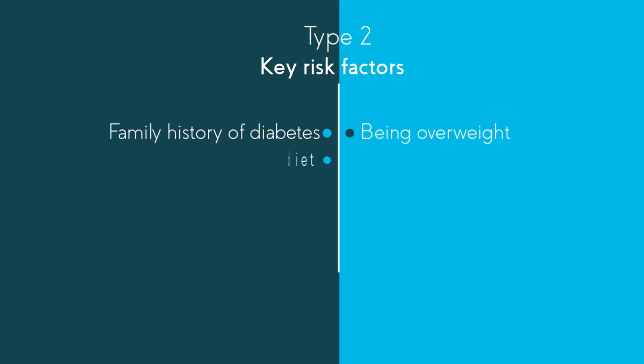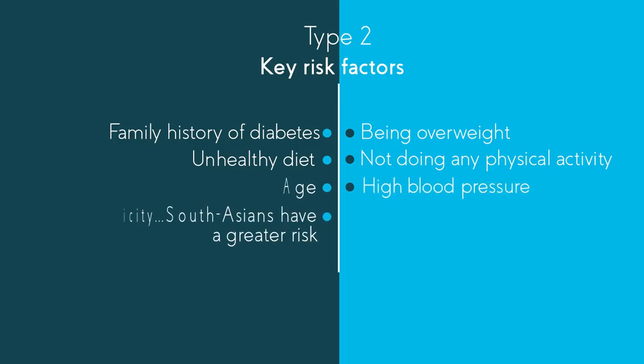There are some key risk factors associated with type 2 diabetes, including a family history of diabetes, being overweight, having an unhealthy diet, not doing much or any physical activity, age, high blood pressure, and ethnicity, where South Asians have a greater risk.